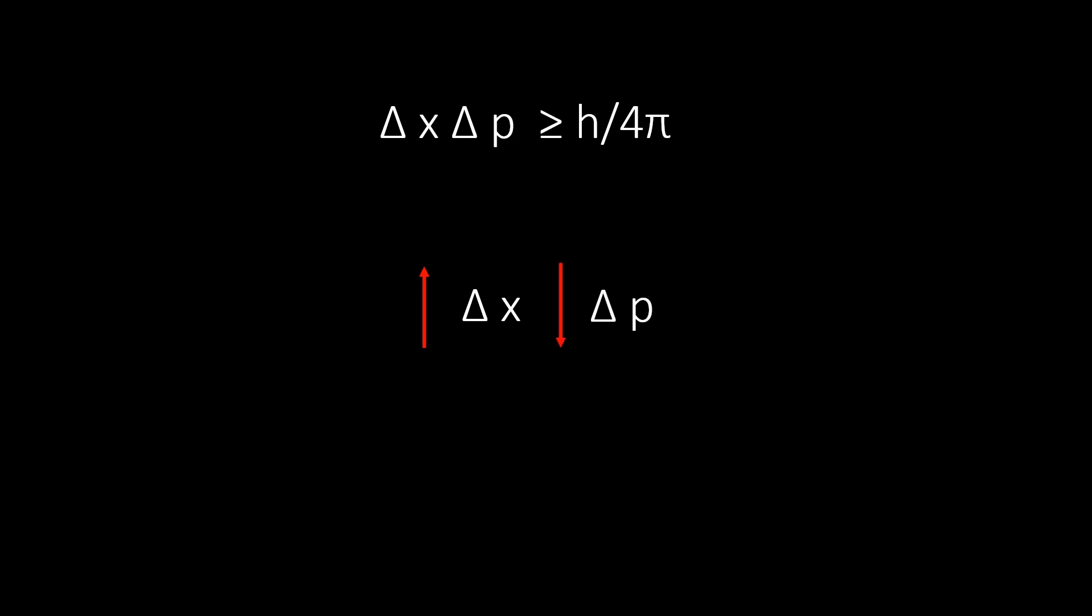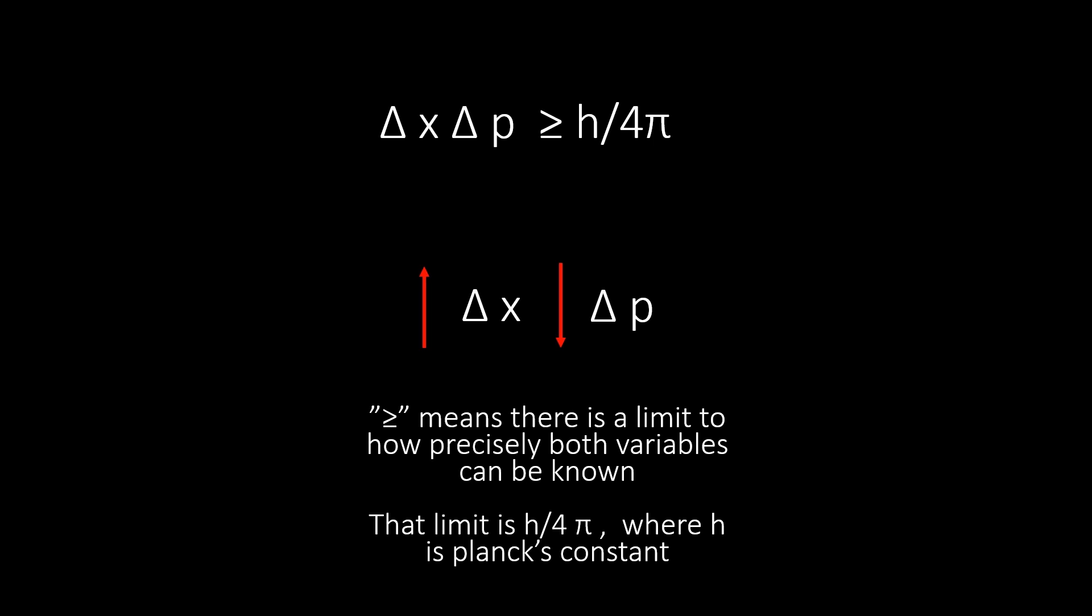And the inequality, or greater than or equal to sign, indicates that there is a fundamental limit to how precisely both the position and momentum of a particle can simultaneously be known. And this limit is h over 4 pi, where h is Planck's constant.